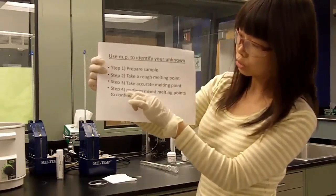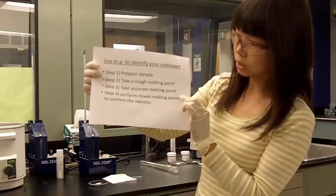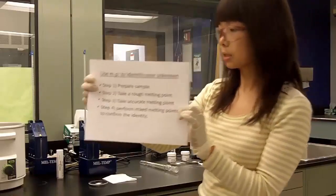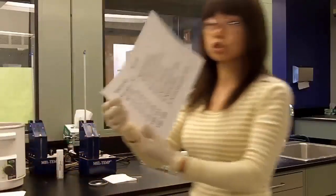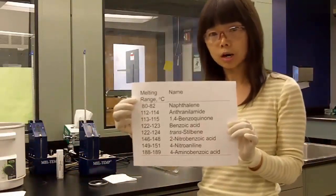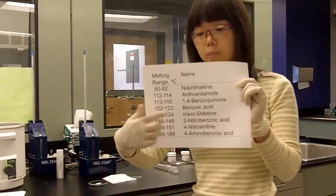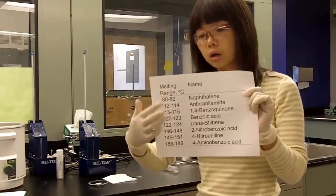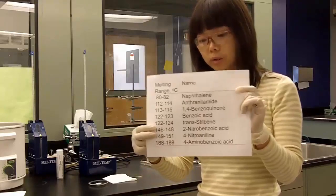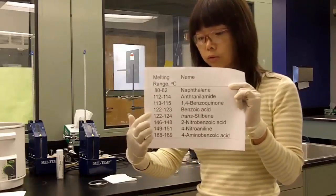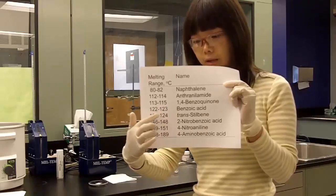And then you need to perform mixed melting point to confirm the identity. So you look at the melting point chart. From this chart you can see there are compounds' names and their melting points. And according to our melting point, our sample falls in this line or the next line.